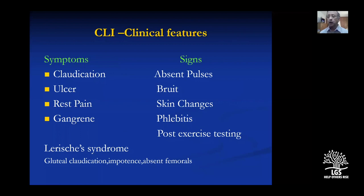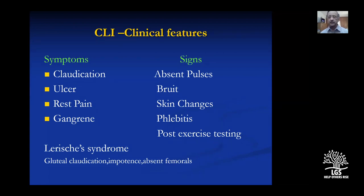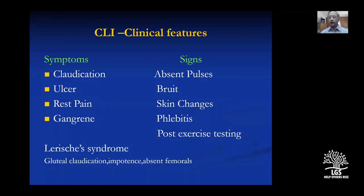Symptom-wise, these patients present with claudication: when the patient walks a particular distance, they get pain, stop for a while, and the pain goes. Under resting conditions, existing blood flow is enough to maintain muscle circulation, but walking increases oxygen demand which cannot be met due to arterial occlusion. At rest, oxygen demand falls and pain disappears. The difference between claudication and neurogenic pseudo-claudication is important.